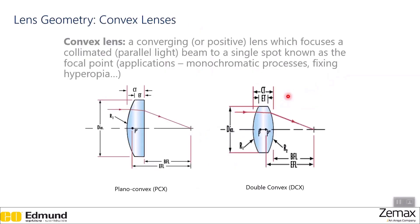The first type of lens, which is the same lens we just saw in the ray diagram, is called a convex lens. A convex lens may also be referred to as a converging or positive lens, and this type of lens focuses the collimated beam — meaning parallel light — to a single spot known as the focal point. Some applications include monochromatic processes or fixing hyperopia vision. We have two types shown: plano-convex, which has a flat surface on one side, and double convex, which has two curved surfaces.